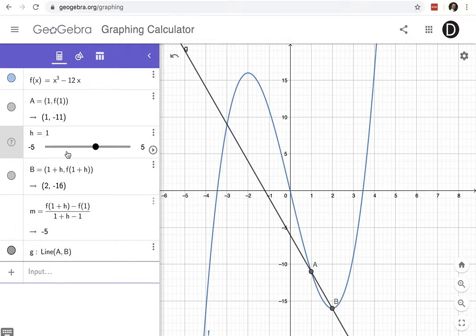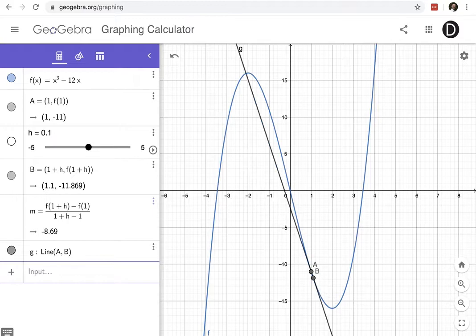So if I change my h to be something like 0.1, now this second point is much, much closer to the first point and my line is going to be really close to my tangent line. And so if I look at the slope here I see that my slope is negative 8.69 between those two points.